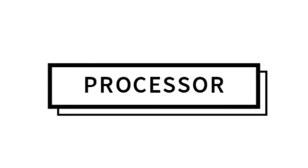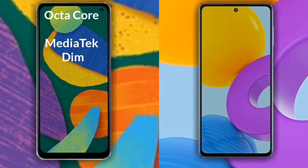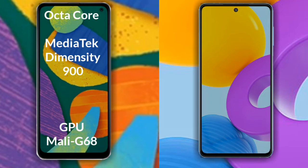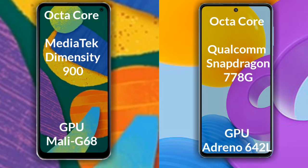Talking about the processor and GPU of both phones: the Samsung Galaxy M53 has an octa-core MediaTek Dimensity 900 processor with a Mali-G68 GPU. The Samsung Galaxy M52 has an octa-core Qualcomm Snapdragon 778G processor with an Adreno 642L GPU.